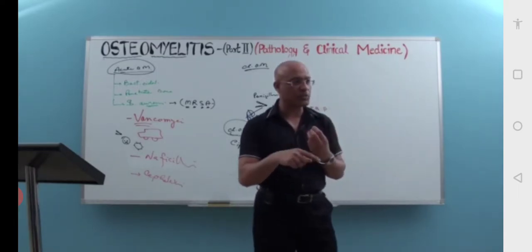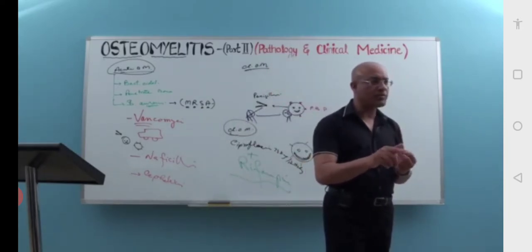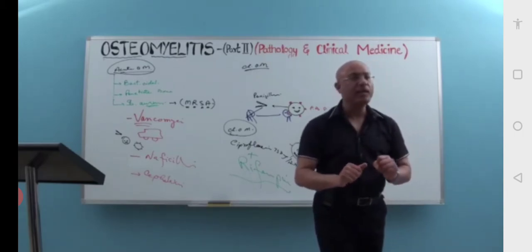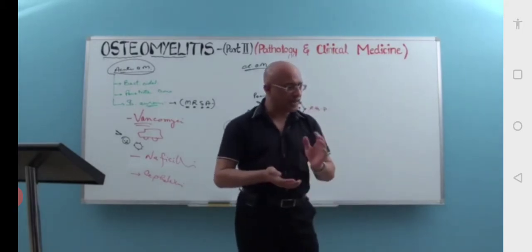And if you suspect that patient is in a situation where MRSA is suspected, then that should be covered too. Usually empirically we start with vancomycin or clindamycin. Both can cover methicillin-resistant Staphylococcus aureus. Or, if you are not suspecting methicillin-resistant organism, you can go with other drugs like nafcillin or cephalexin.